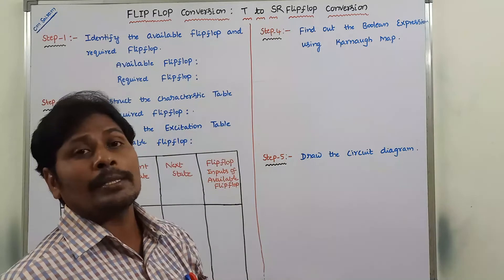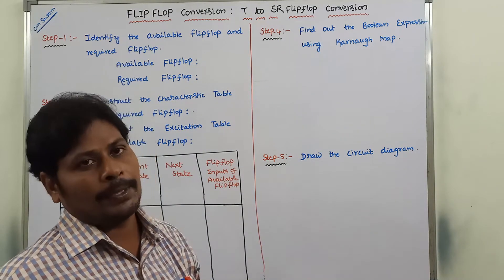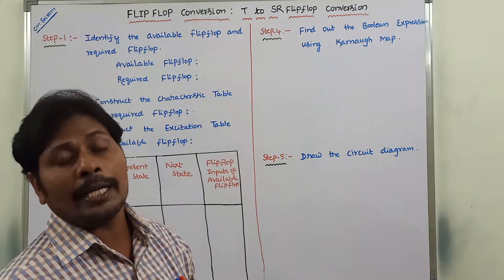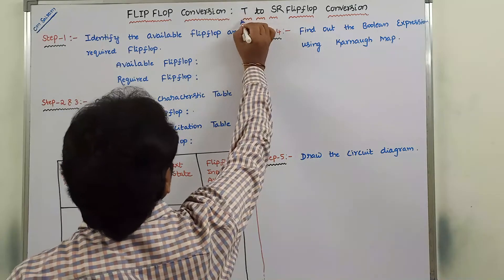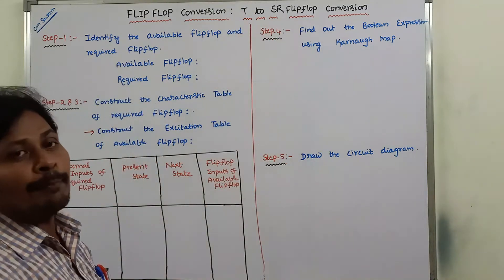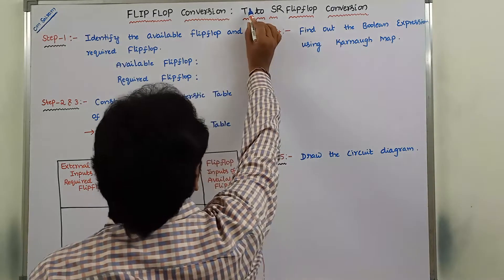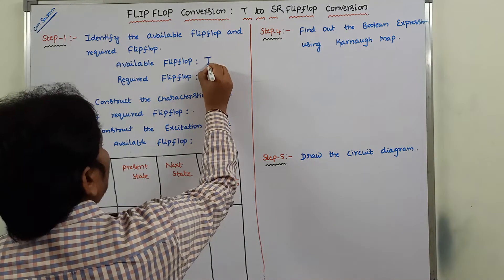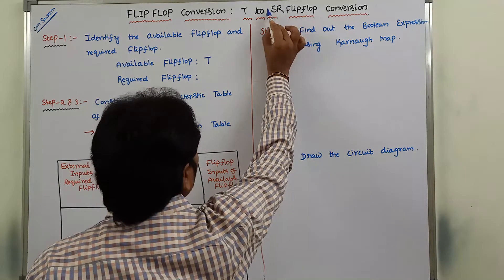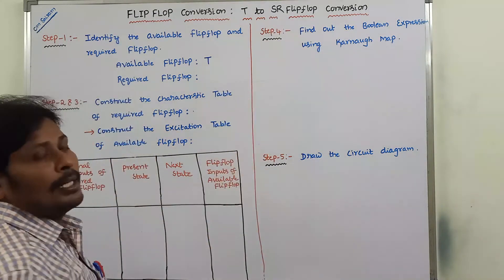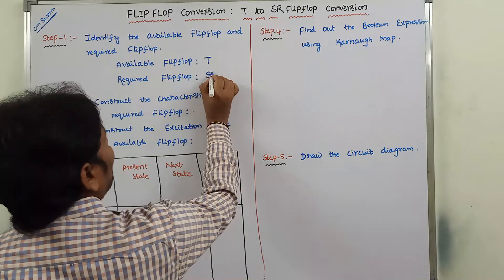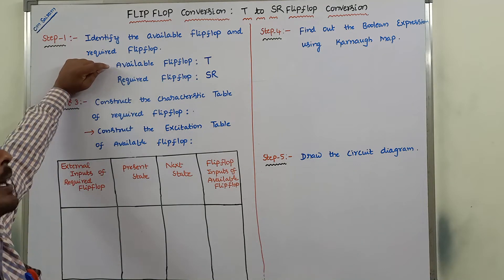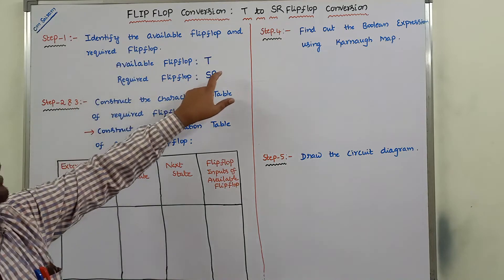To convert T flip-flop to SR flip-flop, we have to follow five steps. The first step is to identify which flip-flop is available and which flip-flop is required. The available flip-flop is the first flip-flop mentioned in the problem statement, so the available flip-flop is T flip-flop. The required flip-flop is the second flip-flop mentioned, so the required flip-flop is SR flip-flop. Step 1 is now completed.